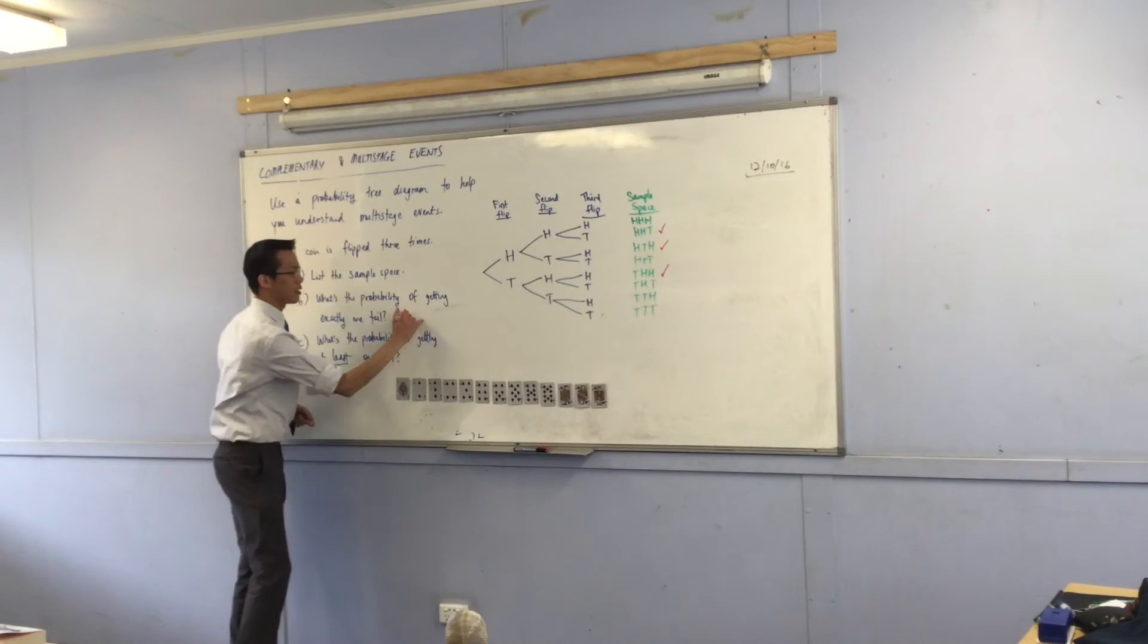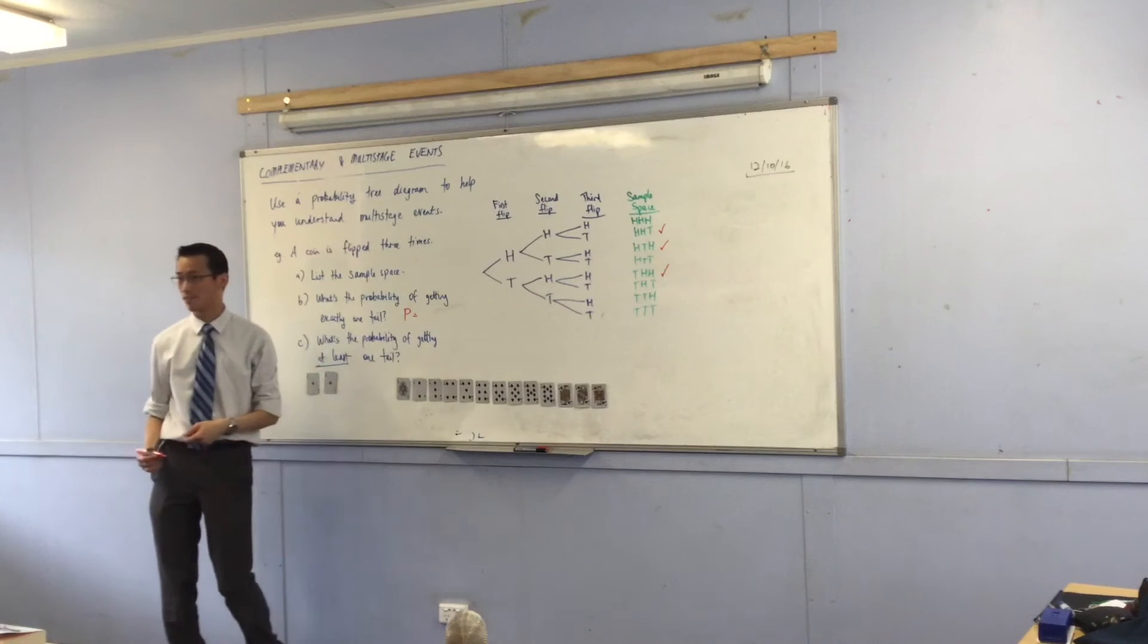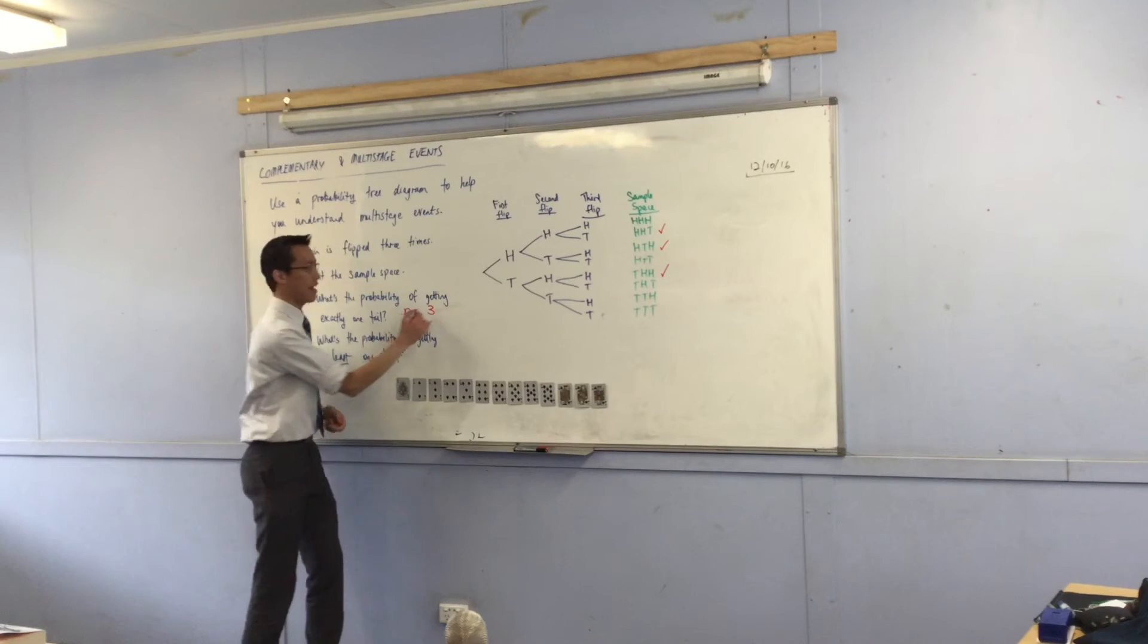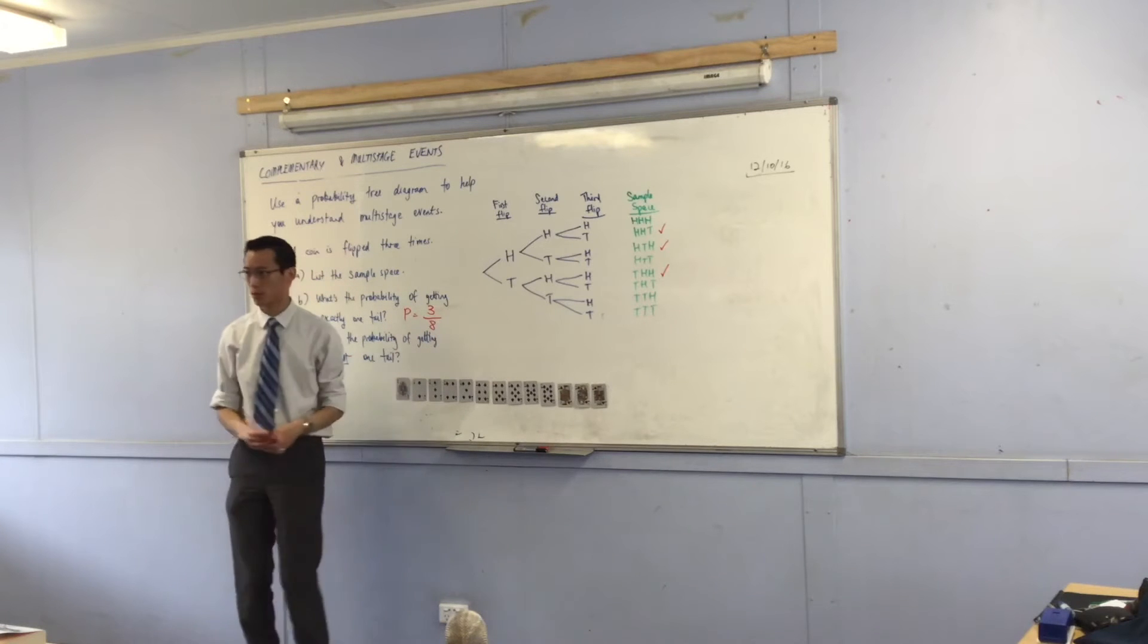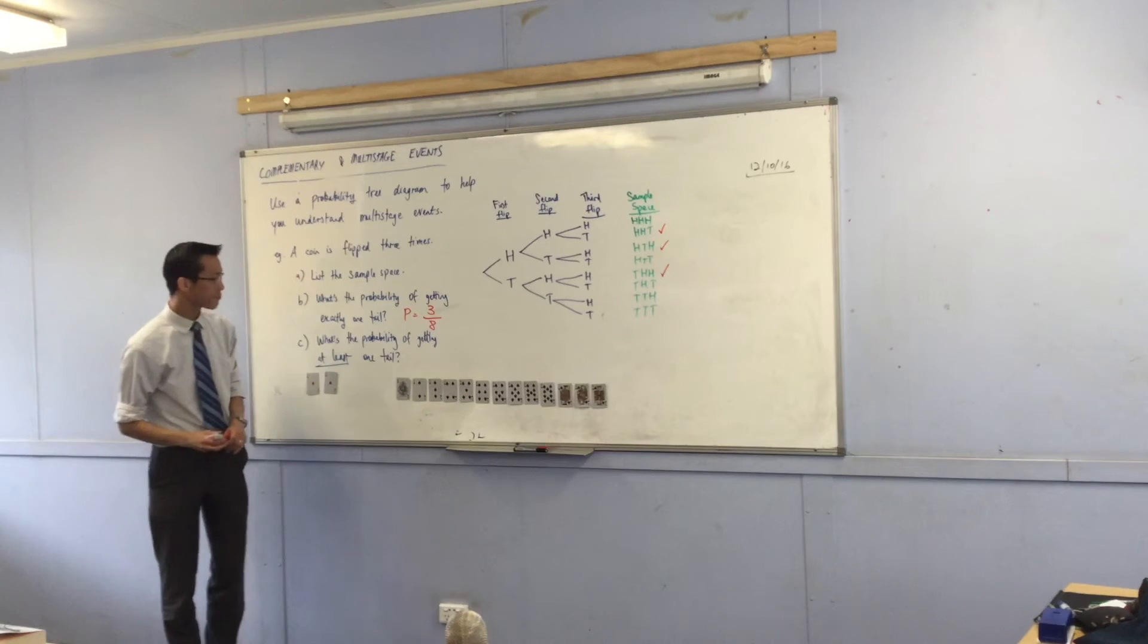So, what's the probability of getting exactly one tail? Three. Three are favourable, and eight is your total sample space. Okay, so that makes sense. Good.